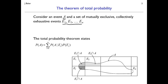The total probability theorem is a way of manipulating the conditional probabilities we talked about in the other video. It says the probability of A is the sum from i equals 1 to N of the probability of A conditioned on event Ei times the probability of event Ei. This kernel inside the summation, recalling our definition of conditional probabilities, is the probability of A intersected with Ei, and we sum those up over all values of i.